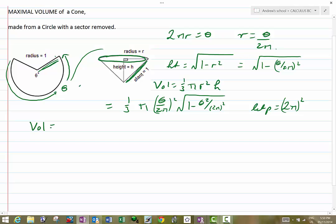So the volume is then 1 third pi theta squared over p times by the square root of 1 minus theta squared over p. And this is what we're going to have to differentiate to try to find any local extrema.